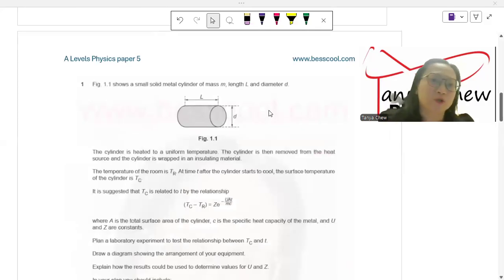Figure 1.1 shows a small solid metal cylinder of mass M, length L, and diameter D. They have already explained the symbols here, so you have to be careful with the symbols that they use. The cylinder is heated to a uniform temperature. The cylinder is then removed from the heat source and the cylinder is wrapped in an insulating material. The temperature of the room is TR. At time T, after the cylinder starts to cool,